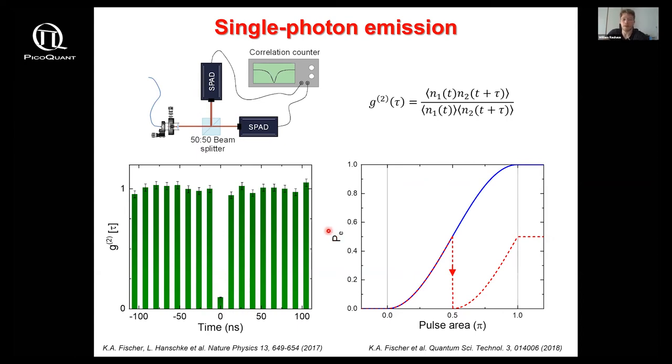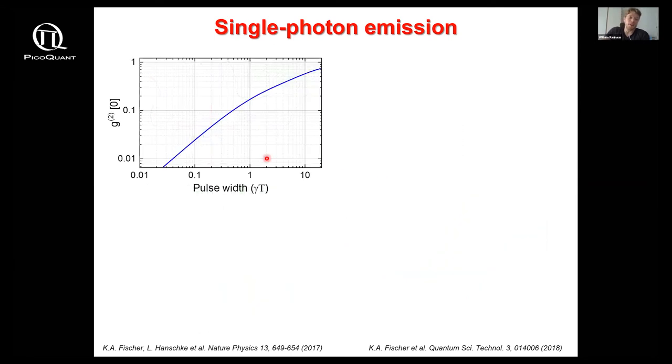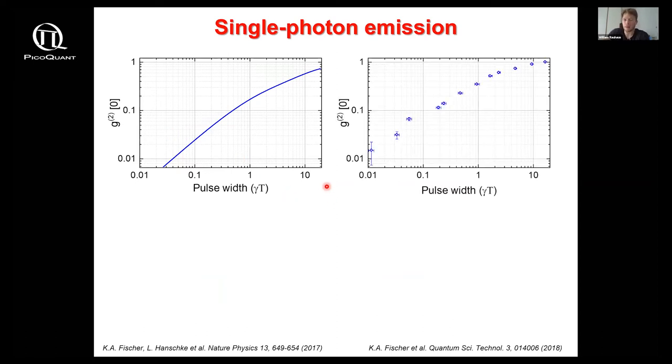This is what ultimately spoils our g2 at zero time delay and hence also deteriorates the quality of our single photon source. Here you can see a simulation of this g2 at zero time delay as we decrease the pulse duration. As expected, if we approach more and more the ideal case of an instantaneous preparation, our g2 at zero gets better and this is also supported by our experiment.